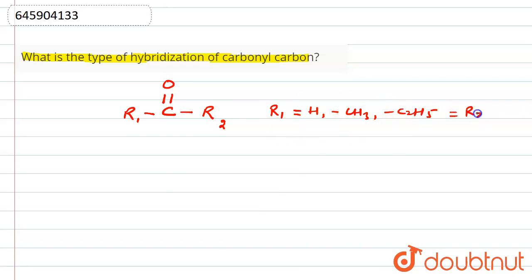Let's take one example. Suppose R1 is H, and here C double bond O, and here CH3. We can take R1 and R2 as any alkyl group. That will be called a carbonyl group. Now, what will be the hybridization of this carbonyl carbon?